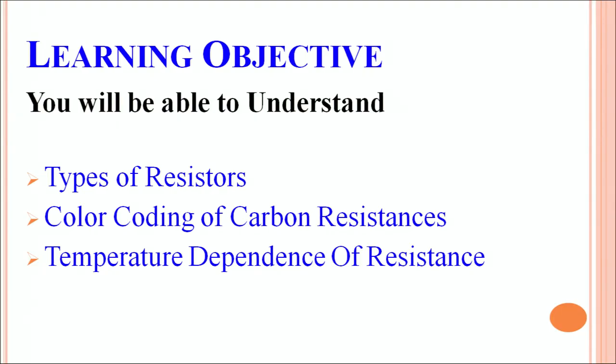The learning objectives in this part: we will be able to understand how many types of resistors are there, how to read the color coding of carbon resistances, and how does the temperature cause any change in the value of resistance.